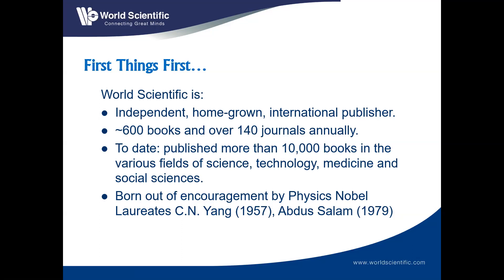World Scientific is an independent publishing house established almost 40 years ago. Our founder is a physicist, so initially the focus was on physics. Over the last 40 years, we've grown to publishing about 600 books a year, and at the moment we manage 140 journals. Today we're talking about how to write an article for consideration in a journal publication.